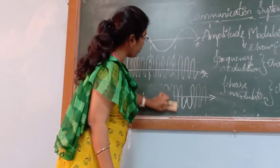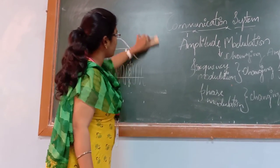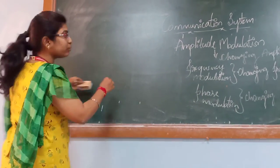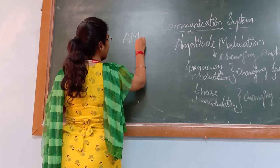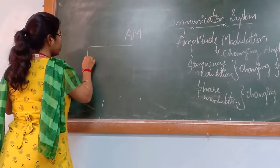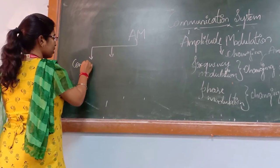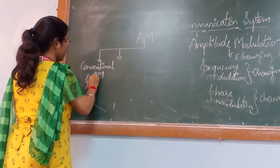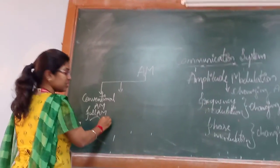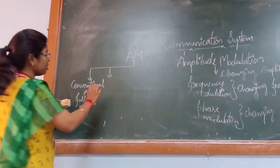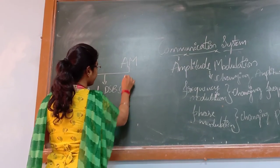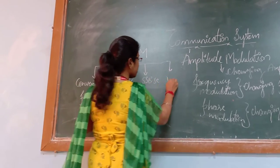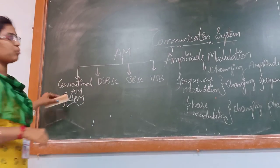So these are the three modulation techniques: amplitude, frequency, and phase. Coming to AM modulation in depth — AM is nothing but amplitude modulation. This is divided into many types. First is conventional AM, which is nothing but full AM — fully we are modulating the amplitude of the signal. Full AM is nothing but full amplitude modulation. Next we have DSB-SC, then SSB-SC, then VSB. These are the four types of amplitude modulation.